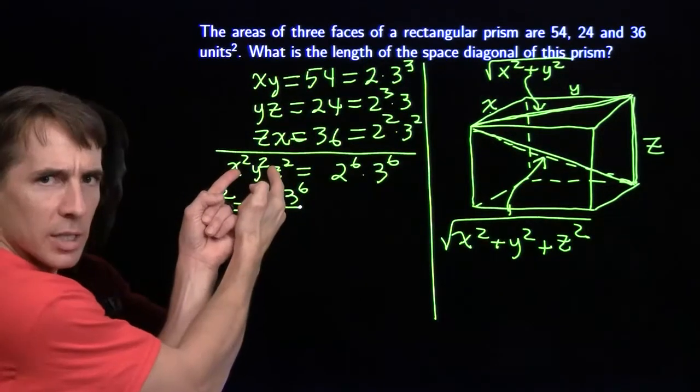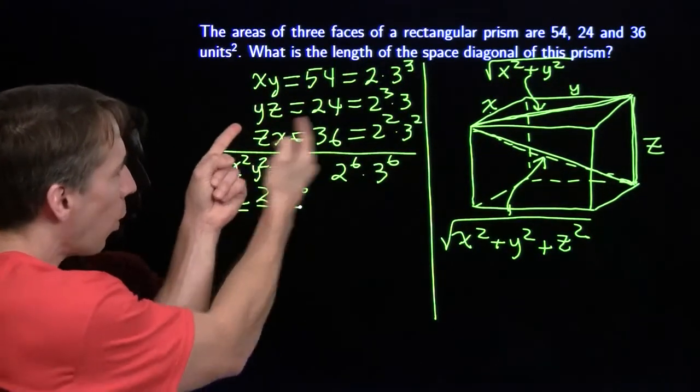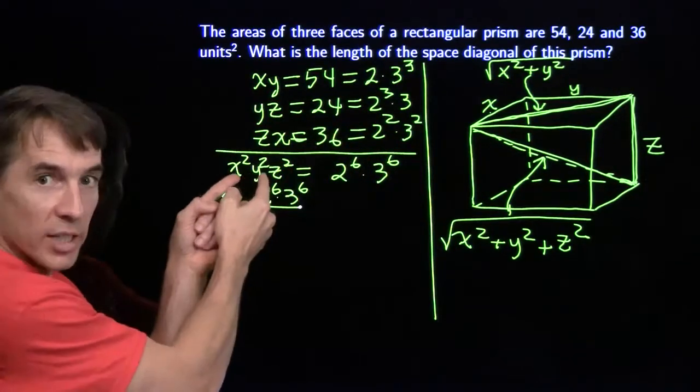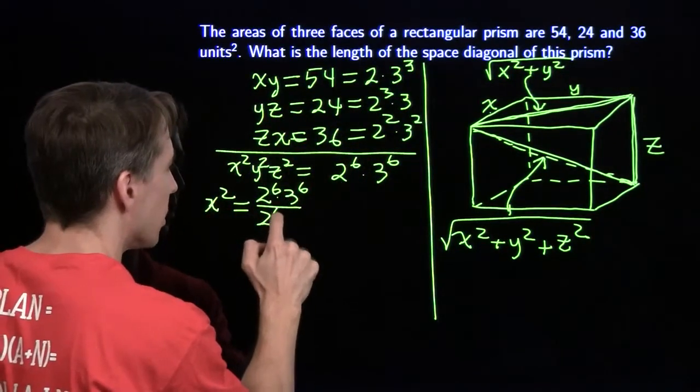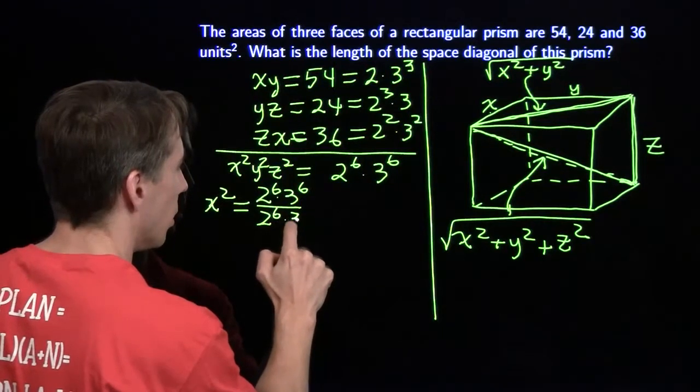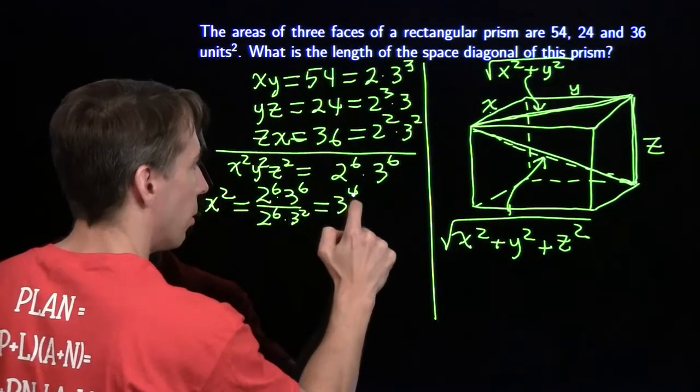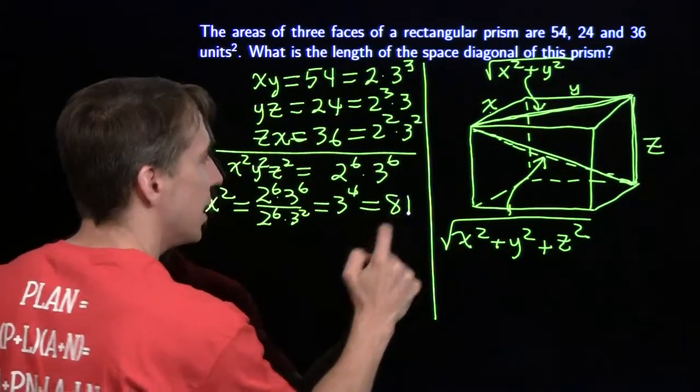I have to divide out y squared, z squared. I want to get rid of that, but yz is right here. Then I have to square that because I'm getting rid of y squared, z squared. I'm getting rid of the 2 to the sixth, I'm getting rid of a 3 squared, and I'm left with 3 to the fourth. That's 9 squared, that's 81.